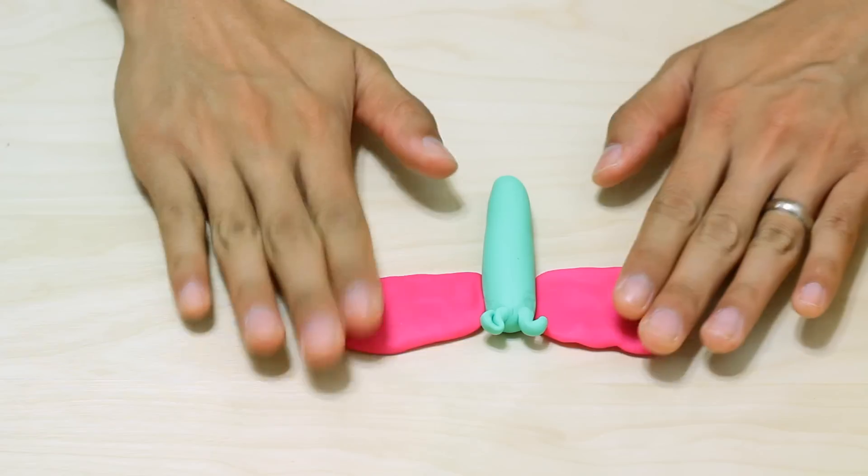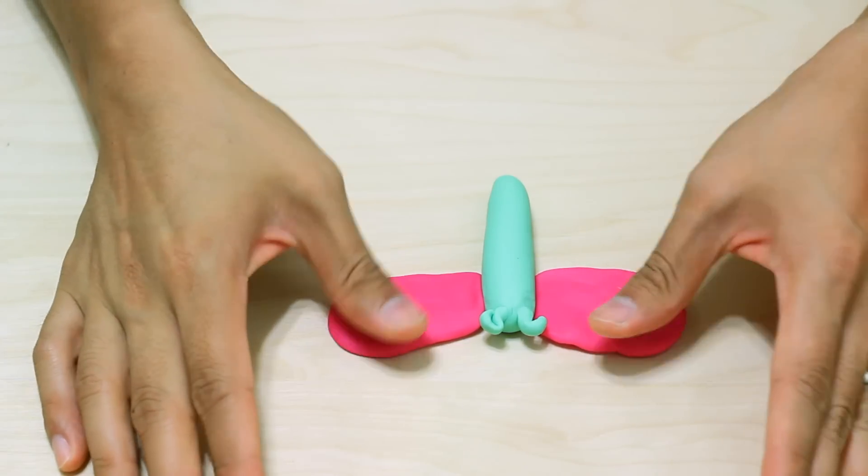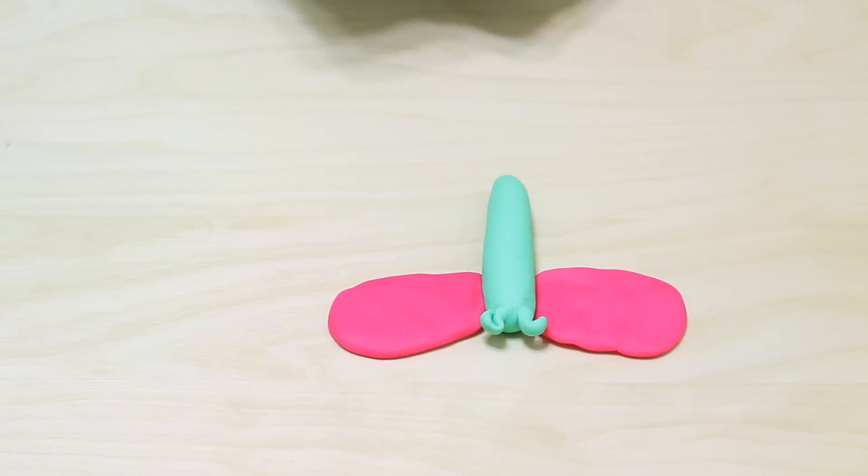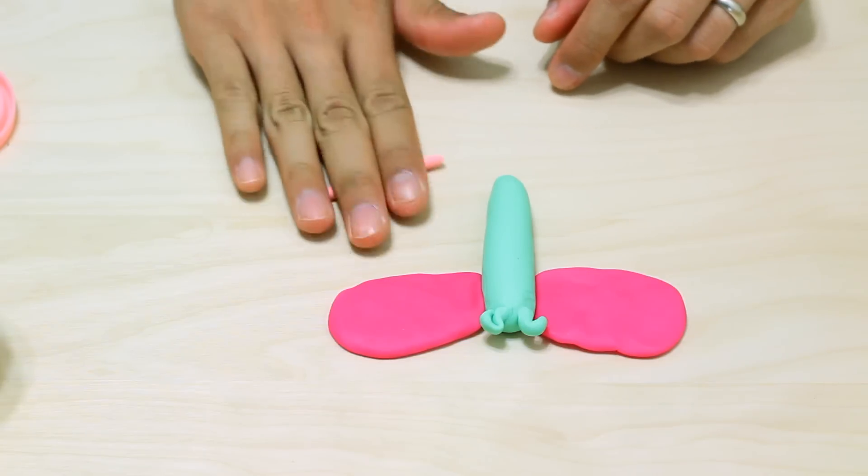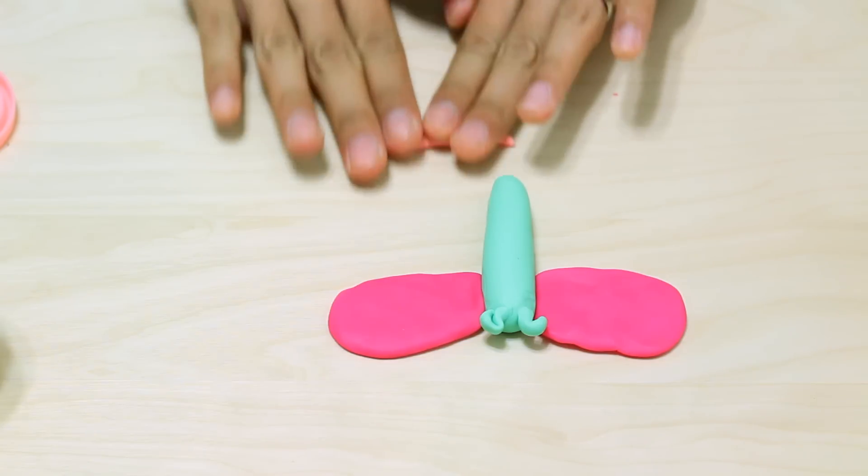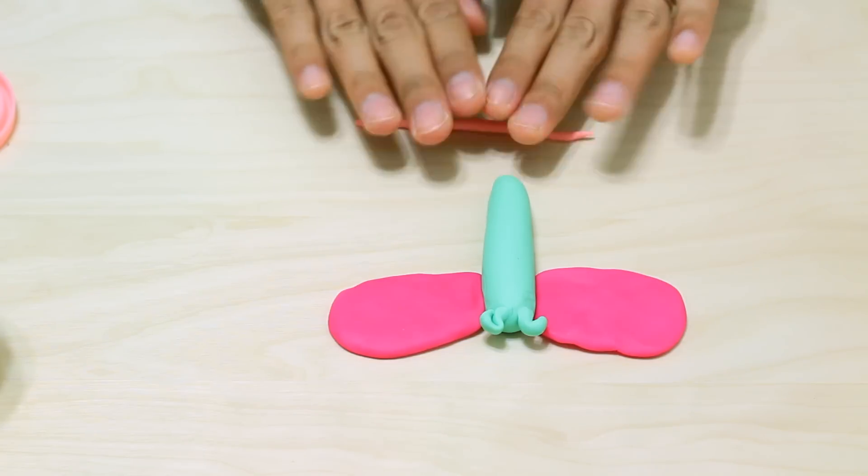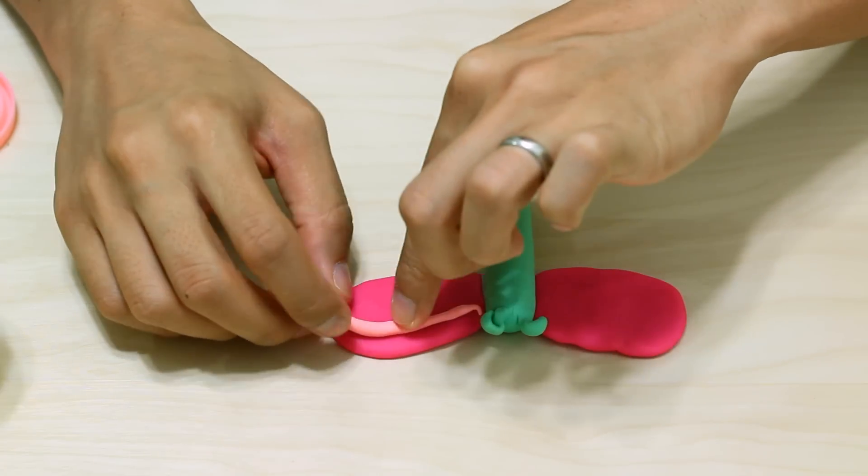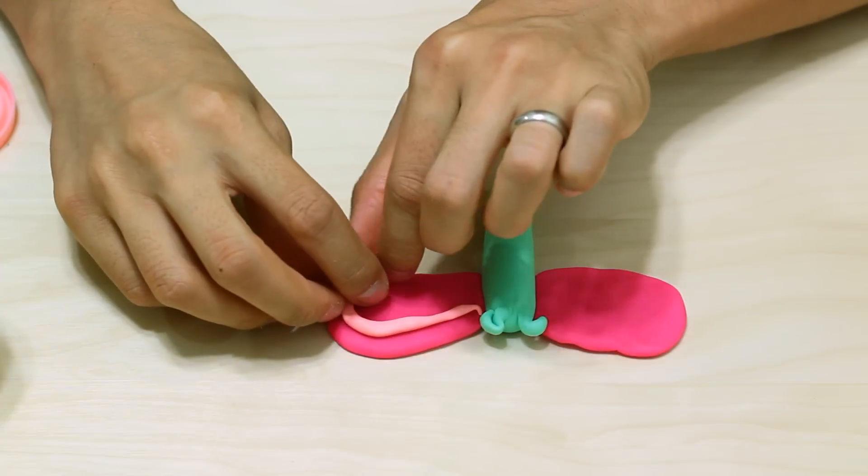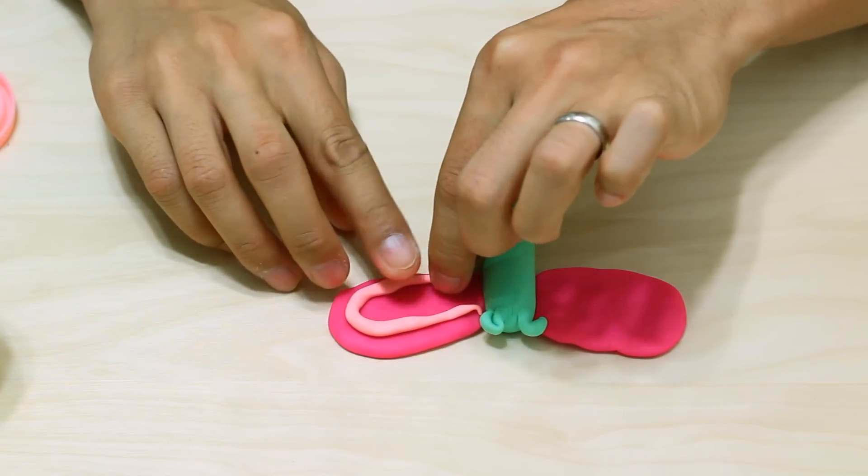I'm just going to add a little bit of detail to these wings by rolling out some lighter pink dough. I'm going to roll it into a thin line and I'm going to make a loop on each wing.